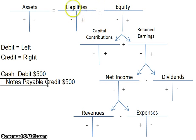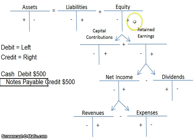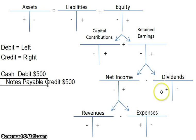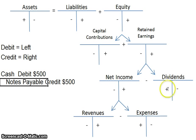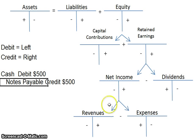Liabilities and equity are on the right-hand side of the balance sheet equation; therefore, you increase liabilities and equity on the right. All these other accounts that work like equity are also increased on the right. However, you've got to watch out for dividends, because if you have more dividends, you reduce equity. So dividends and expenses are kind of like opposite equity accounts — their rules are exactly opposite equity, because as you have more dividends and expenses, you have less equity.